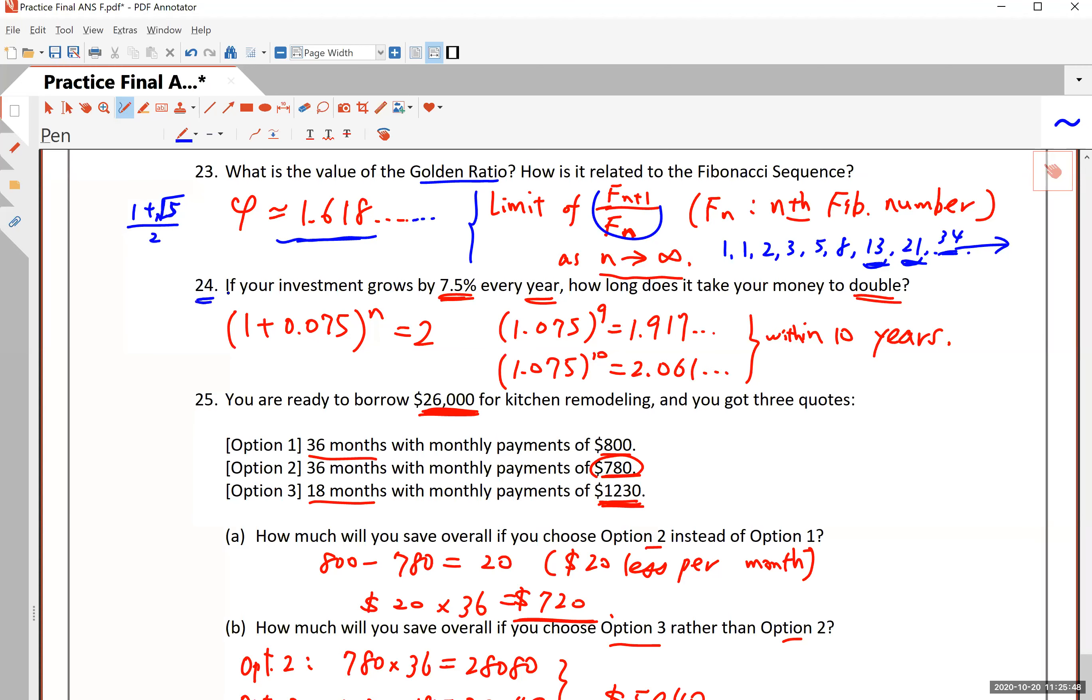Number 24, this is back to the chapter on finance. If your investment grows by 7.5% every year, that's annual compounding, how long does it take for your money to double? I didn't teach you the explicit formula because that would require a sophisticated use of logarithm. So you don't need to know this, but you can do trial and error, which is one strategy of problem solving.